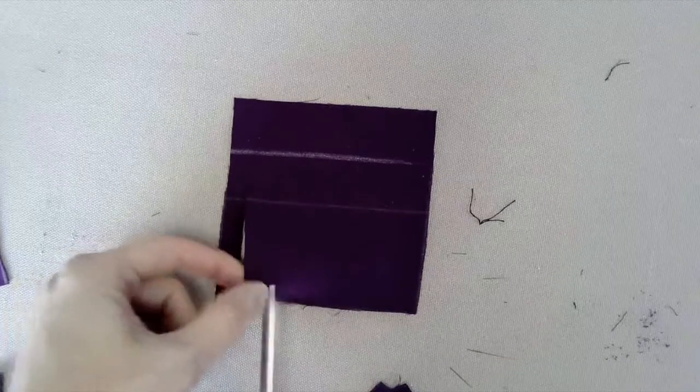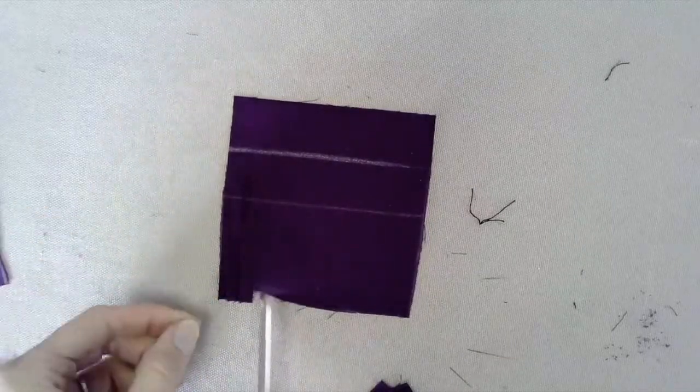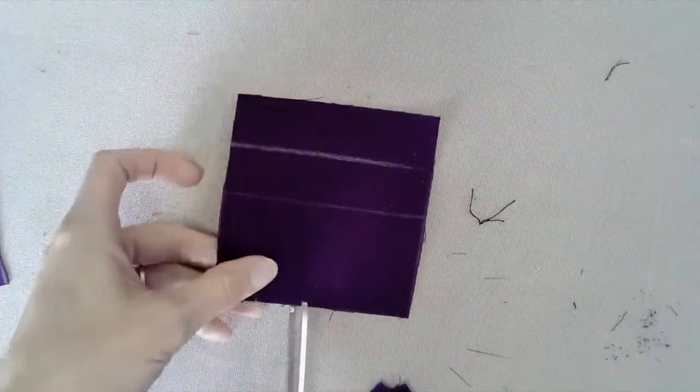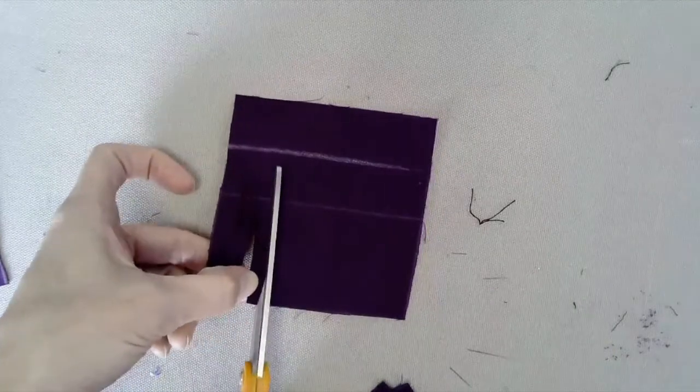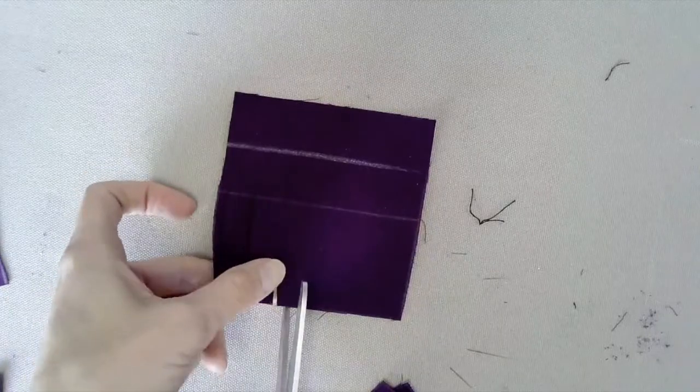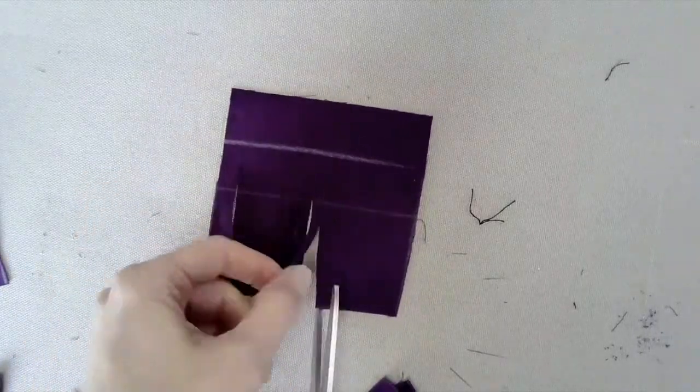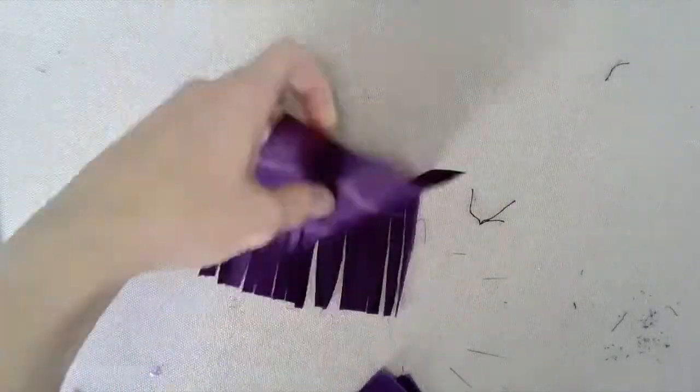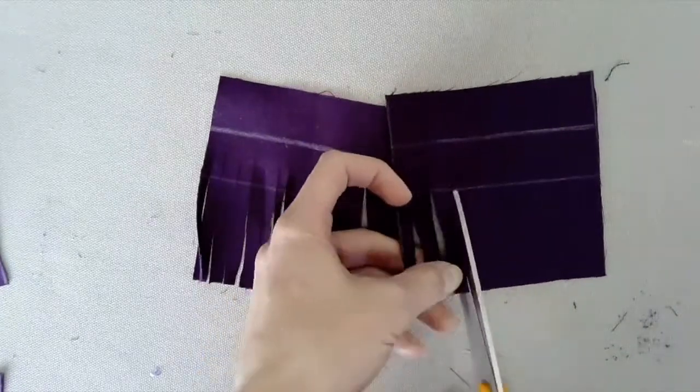Cut vertically approximately 1 quarter inch depending on the size of fringe wanted. Cut past the 2 inch mark line but before the additional 1 inch mark line. Continue cutting all the way across the piece of fabric and repeat with the next piece of fabric.